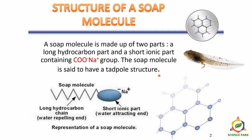In general, the structure of a soap molecule is also known as the tadpole structure, where the head part is a short ionic part and the tail part is a long hydrocarbon chain. The long hydrocarbon chain is the tail of the tadpole and the short ionic part is the head. The head is hydrophilic and the tail is a hydrophobic chain.